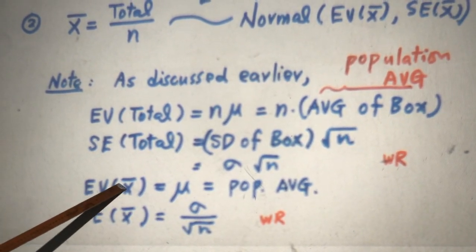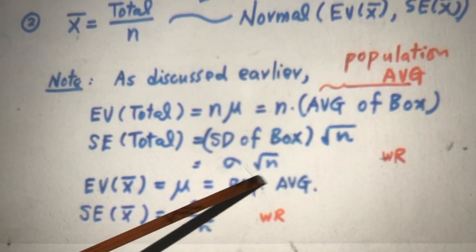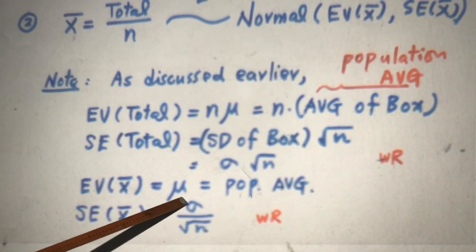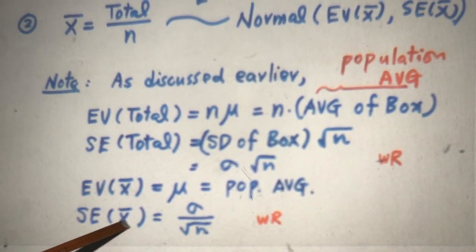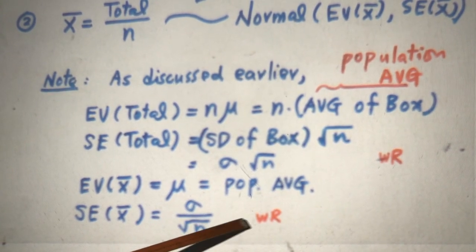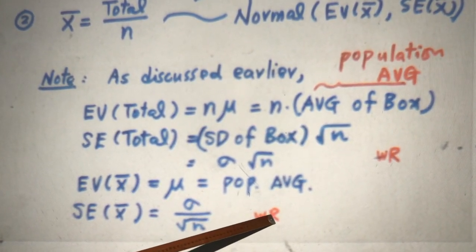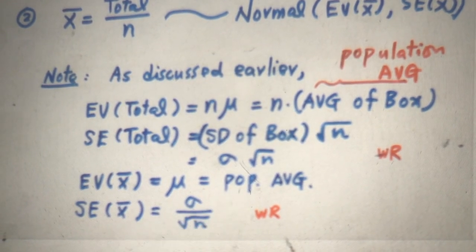And look at EV x-bar. What's EV x-bar? It's average of the box, which is population average. In more advanced books, they use mean. And how about SE x-bar? It's standard deviation of the box divided by square root of N. If this is with replacement, without replacement, you have finite population correction factor here.